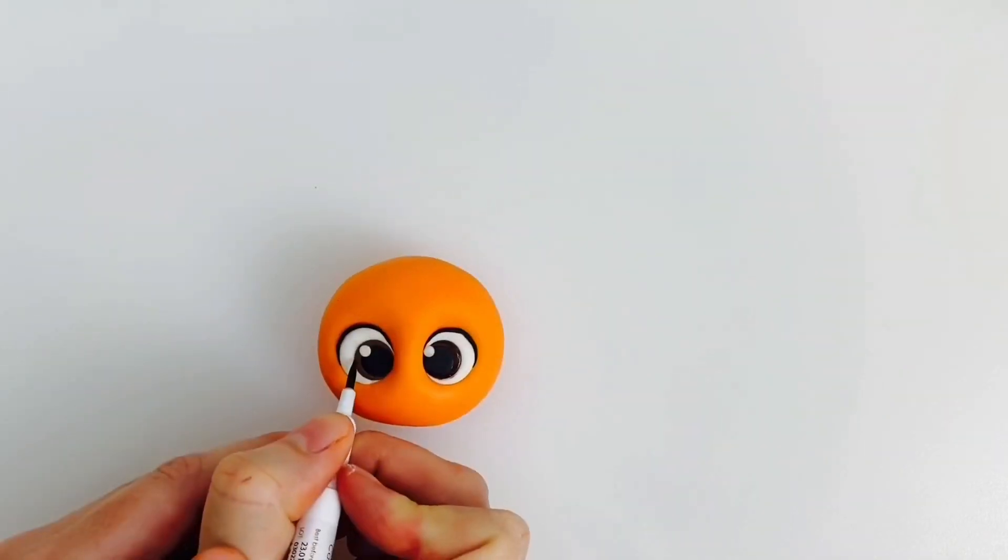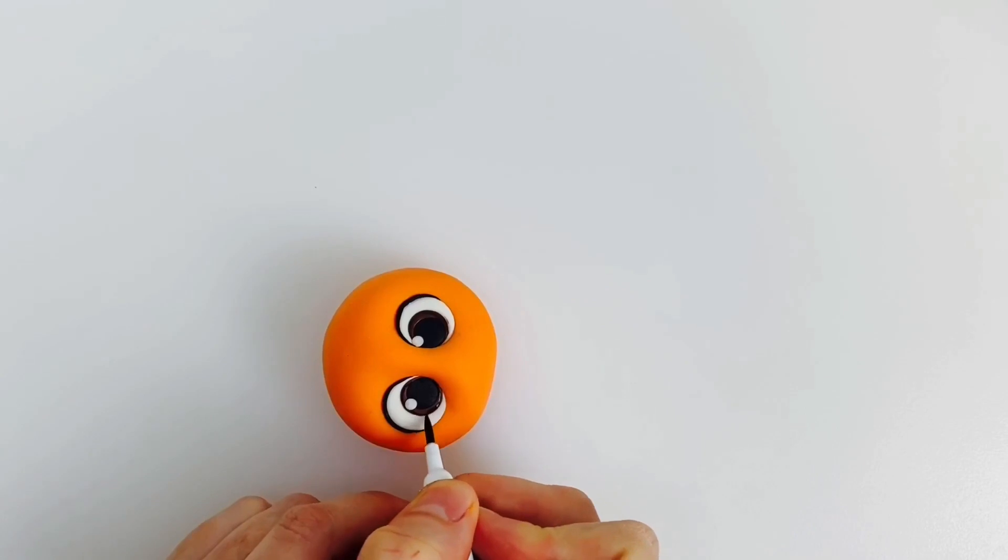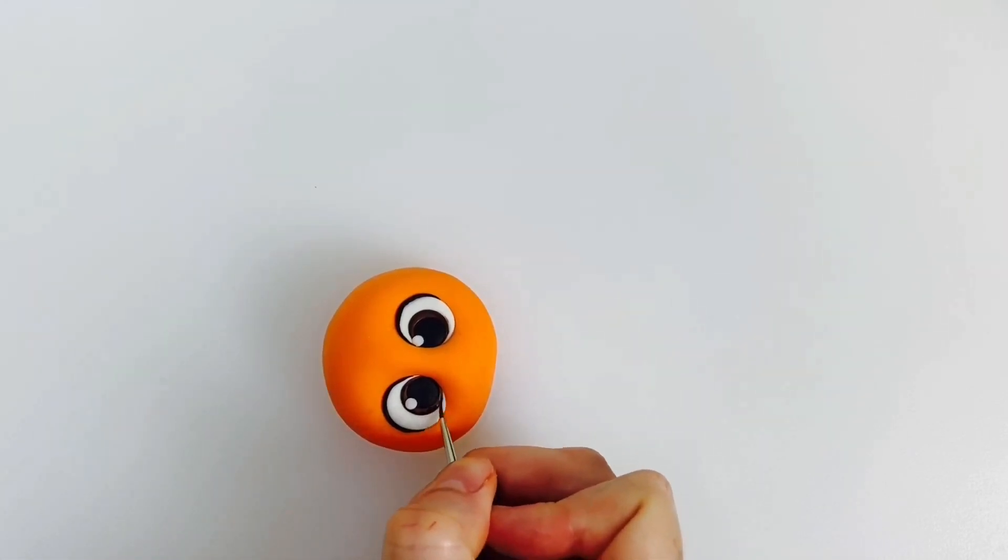Use a brown edible ink pen to draw around the outer edge of the brown in the eye. Dip the paintbrush into some clear alcohol and use it to blend and soften the brown ink.